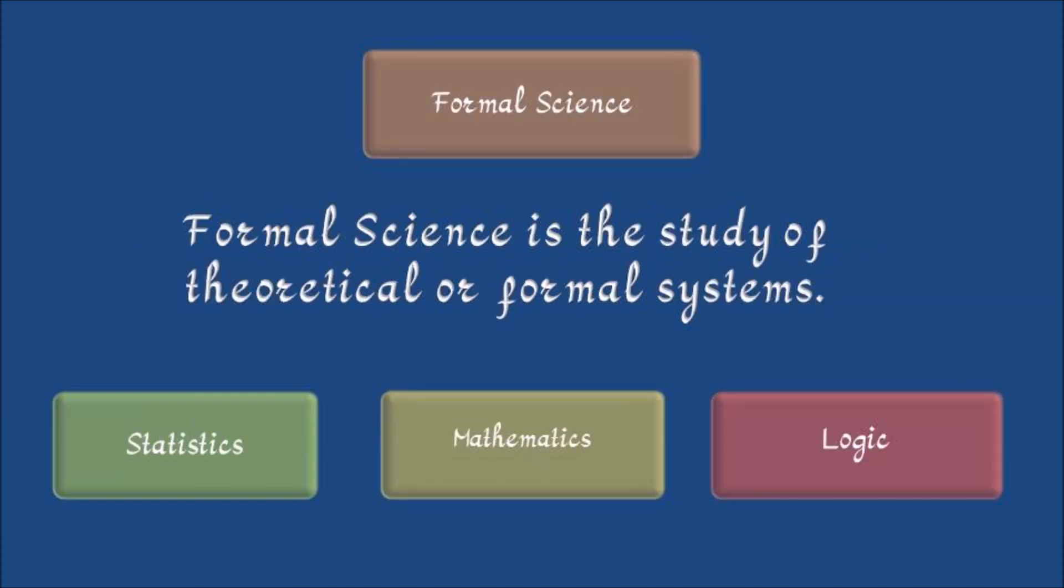Formal science is the study of theoretical or formal systems, such as logic, mathematics, and statistics, which are part of formal sciences.